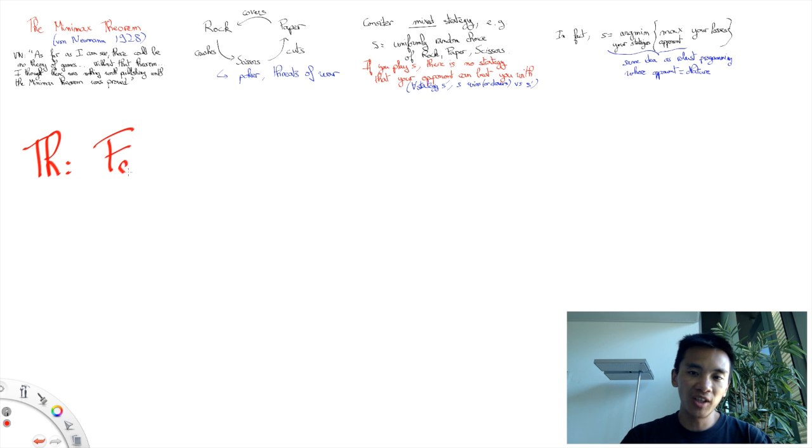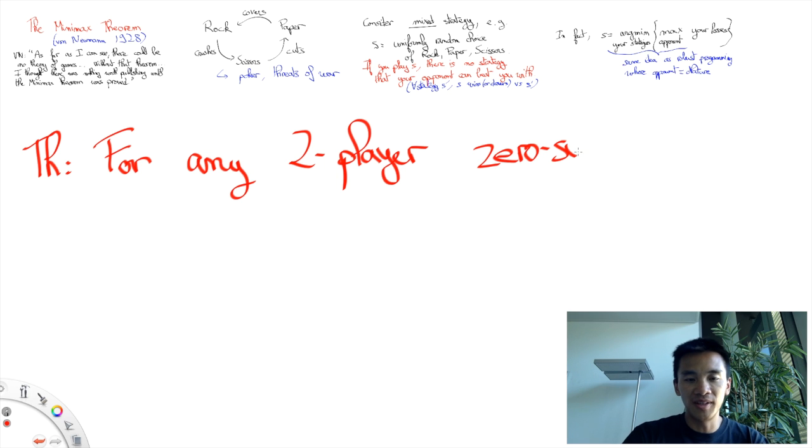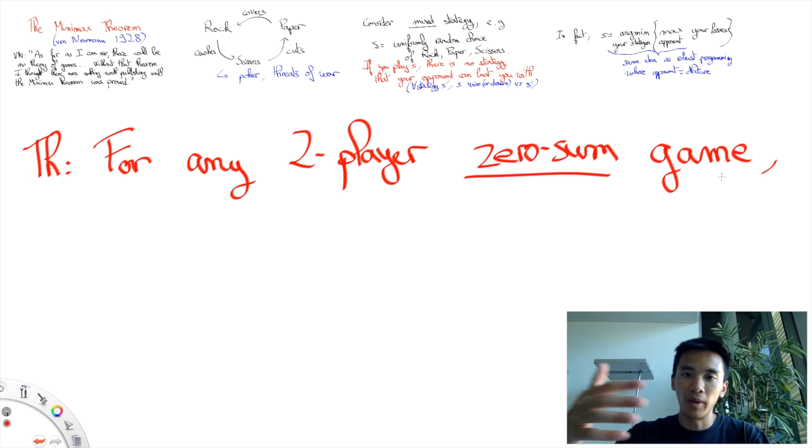the Minimax theorem asserts that for any game where two players really play against one another, we call these games zero-sum games to mean that one player's loss is going to be the other player's gain. In such two-player zero-sum games,